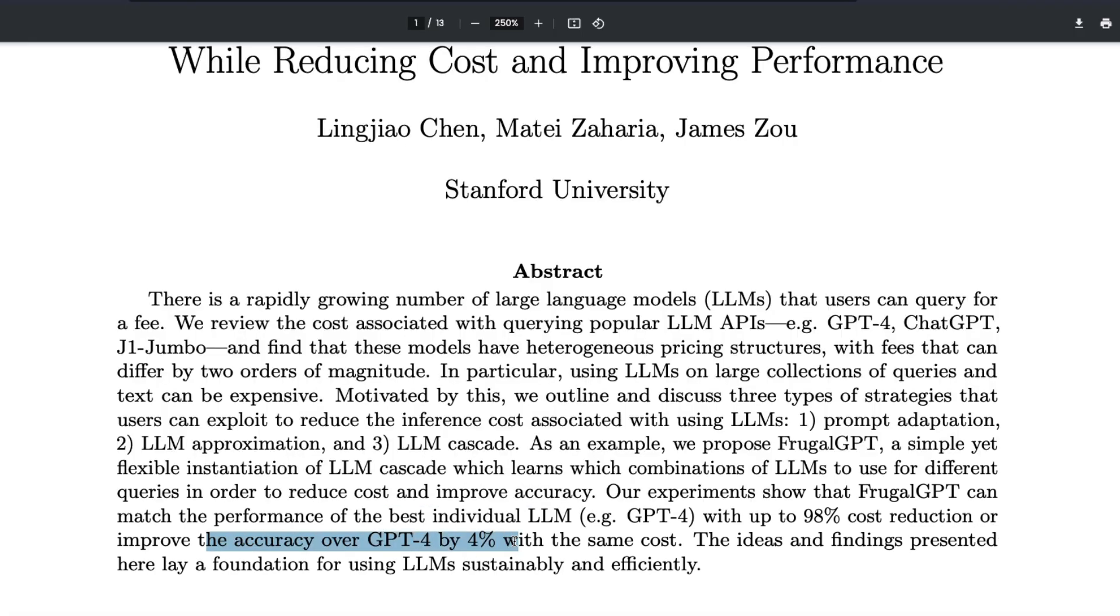It's up to 98% cost reduction while improving the accuracy over GPT-4 by 4% in the same cost. This can help you save your bank balance, but also it's good for sustainability and latency—how fast you can give the response.